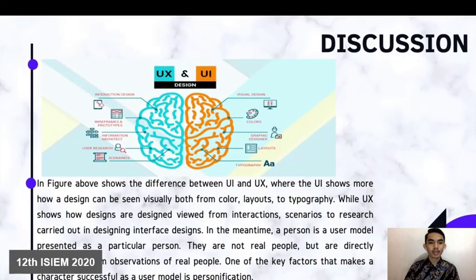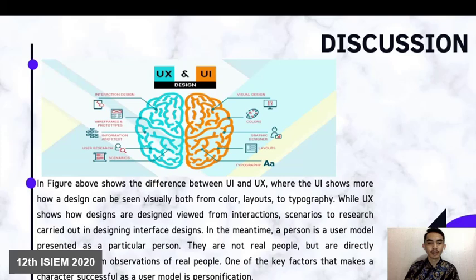The figure above shows the difference between UI and UX, where UI shows how a design looks — from color and layout to typography — while UX shows how the design works from an interaction and scenario perspective. Regarding personas, a persona is a user model representing a particular type of person. They are not real people but are summarized from observation of real people. One of the key factors that makes a persona successful as a user model is personification.